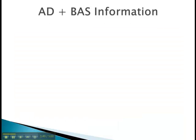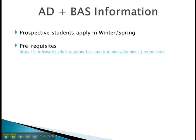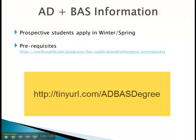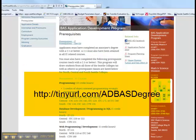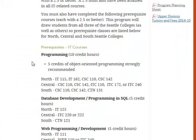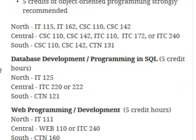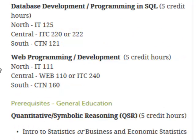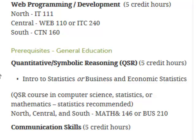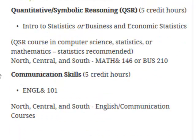To join our program, prospective students need to apply by our winter and spring deadlines. There are required prerequisites — see the program planning sheet for the AD BAS, and go to our website to check out what is required to apply. In general, you need to already have or be close to finishing: 10 credits of programming courses, 5 credits of database development programming and SQL, 5 credits of web programming development, 5 credits of statistics or upper-level math, and English 101.